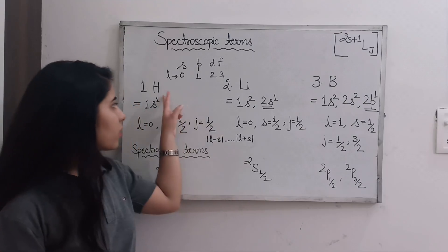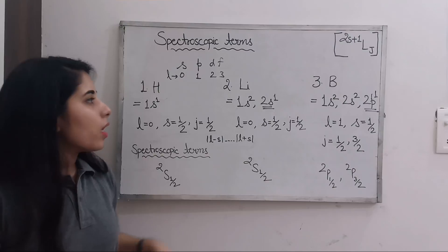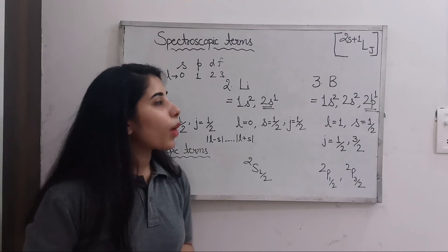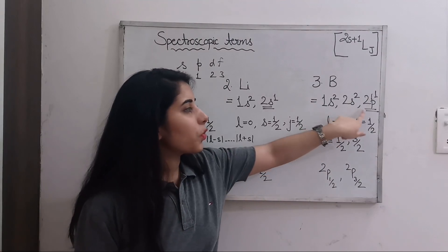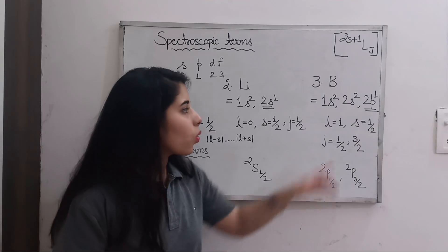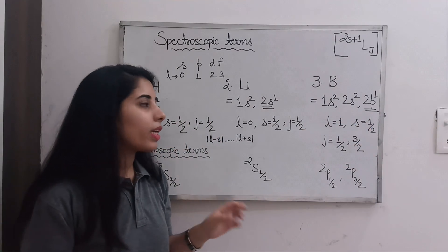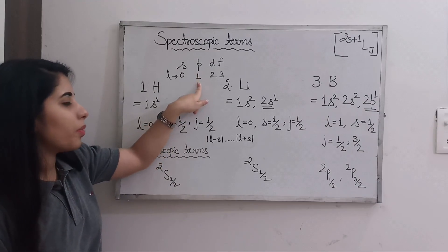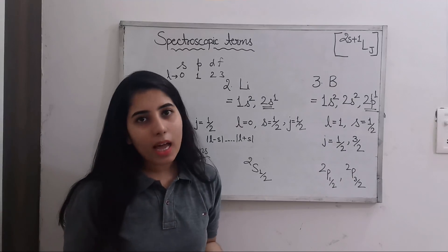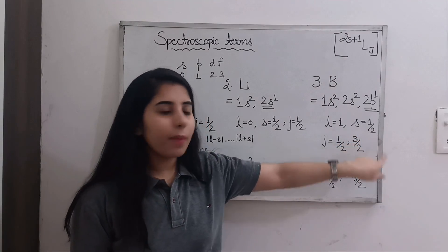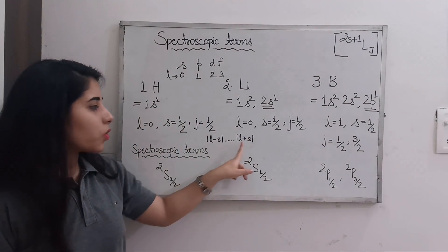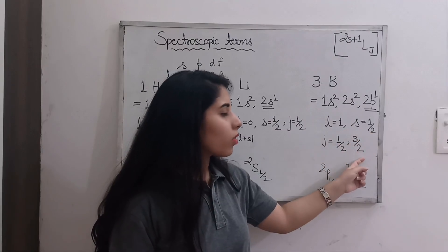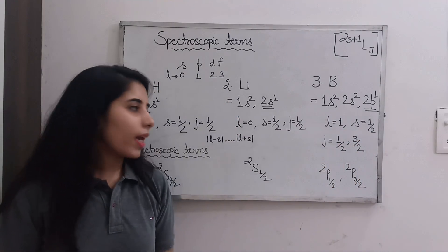Next is boron. We first write its electronic configuration: 1s2 2s2 2p1. We look at the last term, which is 2p1. Since we have p here, the value of L = 1. The spin S = 1/2. The value of J ranges from |L − S| to L + S: 1 − 1/2 = 1/2 and 1 + 1/2 = 3/2. So we have two values of J: 1/2 and 3/2.